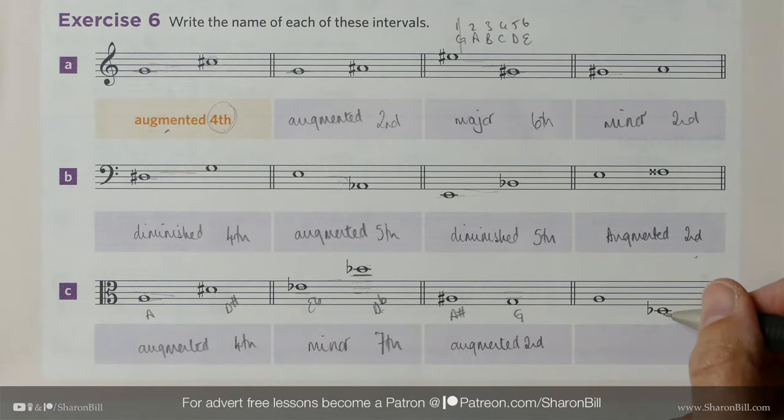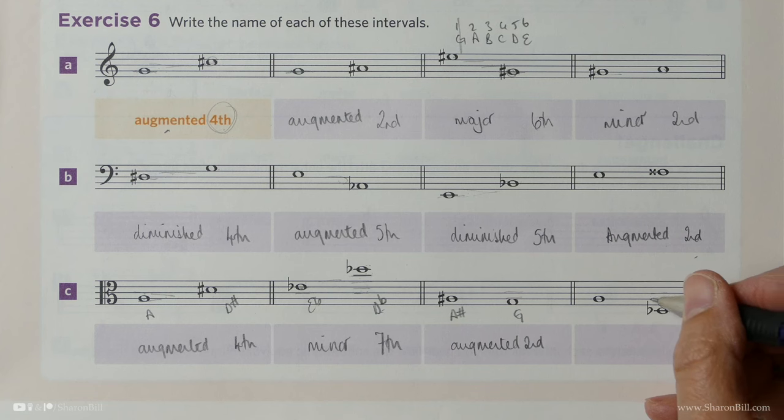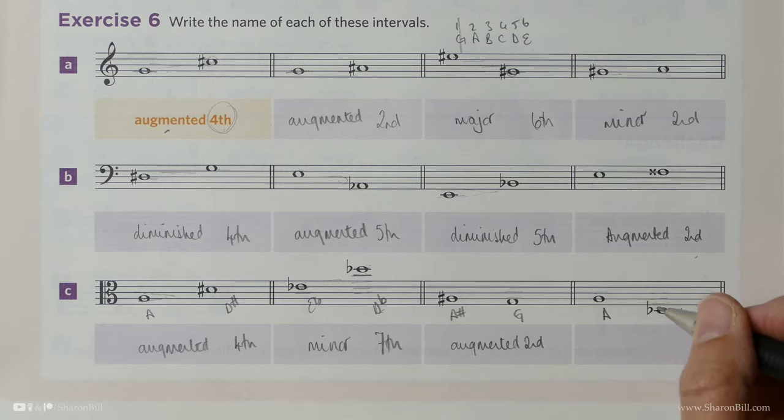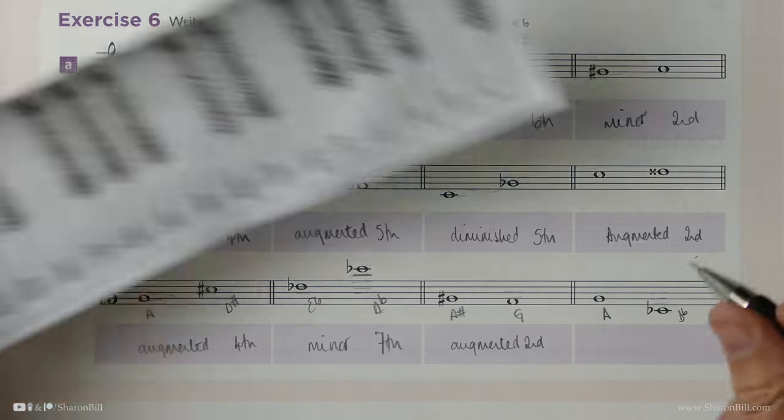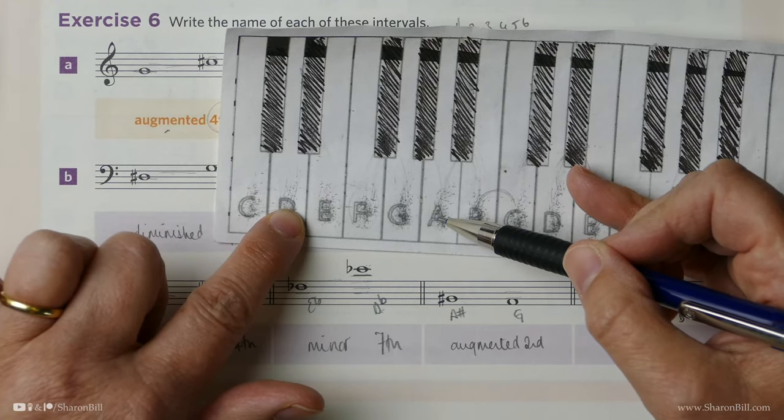And then finally we have here... So that note here is a C, B, A, G, F, E, D flat to a C, B, A. Now then we know that D to A is perfect.